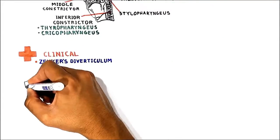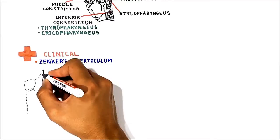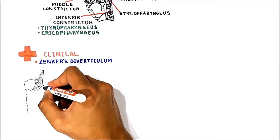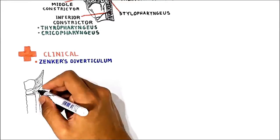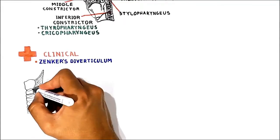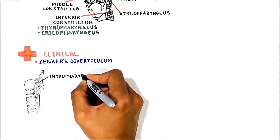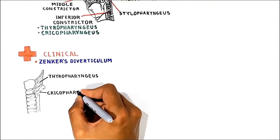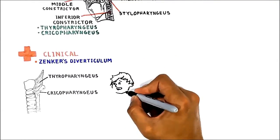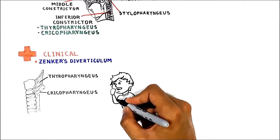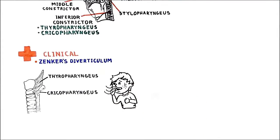Zenker's diverticulum, also known as a pharyngeal pouch, is an outpouching at the level of the laryngopharynx. It is located in the posterior midline at the cleavage plane between the thyropharyngeus and the cricopharyngeus muscle, which is part of the inferior constrictor muscle. Zenker's diverticulum causes problems when things get stuck there.